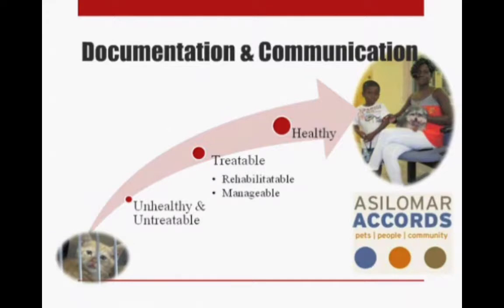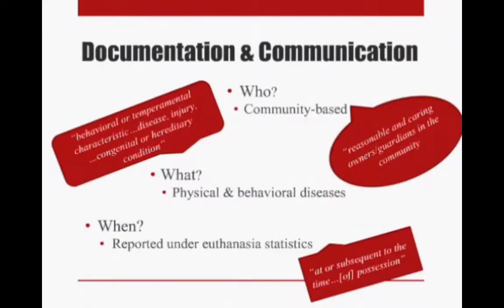In some cases, even unhealthy and untreatable animals may be able to get adopted. The Asilomar definitions are community-based — based on what reasonable and caring owners and guardians in the community would do for their pets and how they would categorize them. A lot of shelters categorize animals based on what they can do in the shelter, but that's not actually how these guidelines are meant to be used. There's lots of information on Maddie's Fund's website about how to figure out what your community thinks should be in each category.